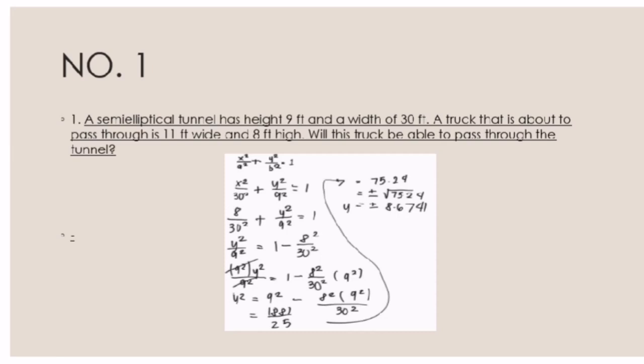Next, we are going to multiply both sides by 9 squared. It will become y squared equals 9 squared multiplied by 1 minus 8 squared over 30 squared. Canceling the 9 squared, it will become y squared equals 9 squared minus 8 squared times 9 squared over 30 squared.